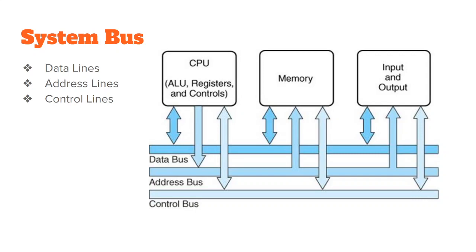The address bus handles addresses. Whatever information is stored in the system is stored at a specific address — a numeric or alphanumeric identifier for a memory location, similar to a home address. Before data is actually transmitted, the computer checks from where the data is coming by looking up its address. This is why the address bus must be separate from the data bus.